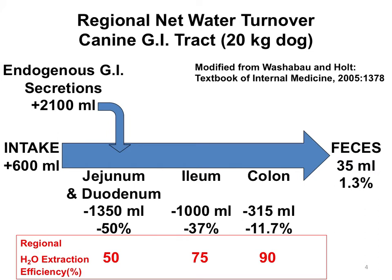Moving further to the ileum, another 37% is removed, and by the time you reach the colon, only about 12% is then removed. Once the feces are formed, you've removed basically 98.7% of the fluid in the intestinal tract. This is a very efficient system, and not only is fluid being reabsorbed, but a large amount of electrolytes are being reabsorbed as well.